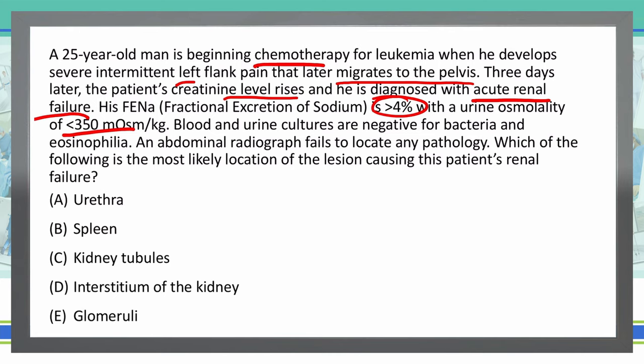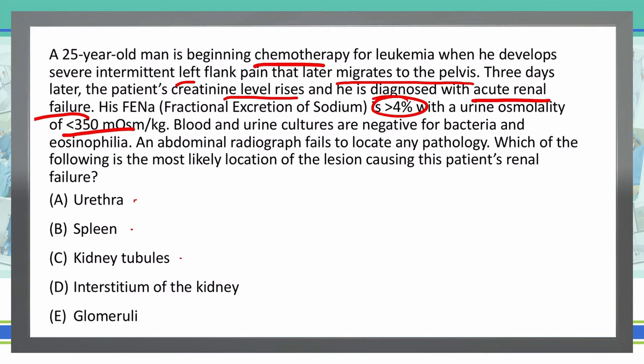We're going to have to make a decision between a lesion in one of these five locations causing these problems. Is this in the urethra, the spleen, the kidney tubules, the interstitium of the kidney, or the glomeruli?